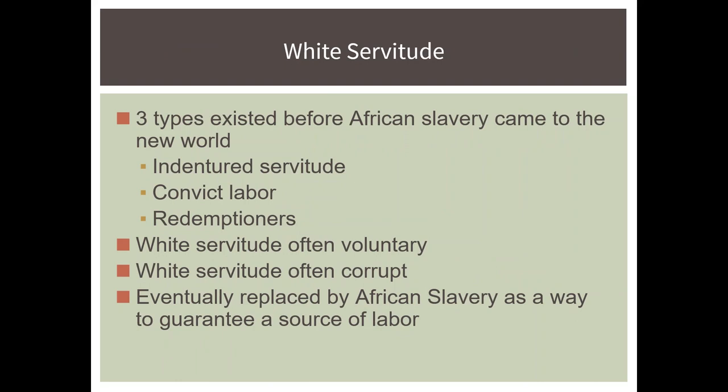Indentured servitude is where somebody is given a contract in return for passage to the New World. Maybe you're not doing well in England or Spain — you find a wealthy benefactor who agrees to pay for your transport, but you have to work for them for a five- or seven-year period. There was also a lot of convict labor, especially from England, Scotland, and Ireland, which was encouraged as a way to get rid of what they considered an undesirable population while providing a labor force for plantation owners in the New World.